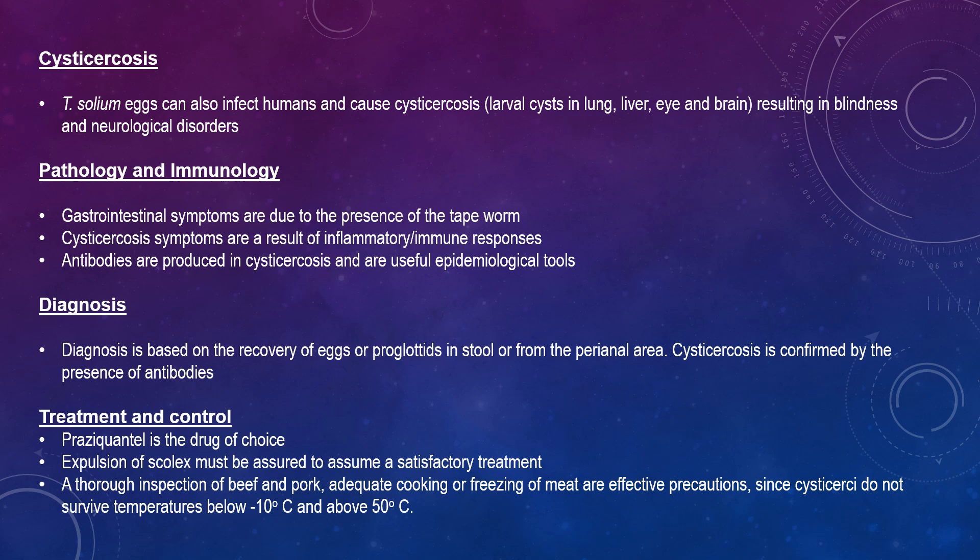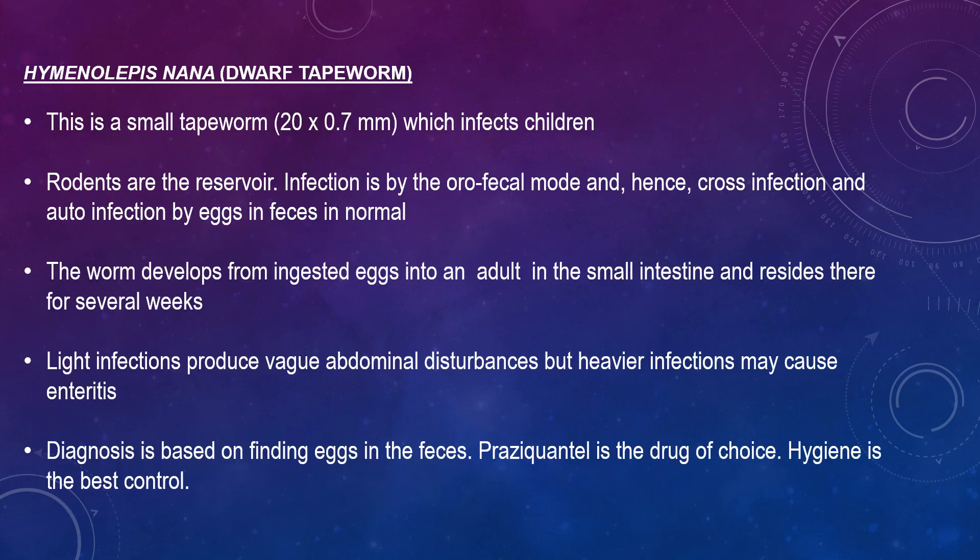For treatment and control, praziquantel is the drug of choice. Expulsion of the scolex must be assured to confirm satisfactory treatment. A thorough inspection of beef and pork, adequate cooking or freezing of meat are effective precautions, since cysticerci do not survive temperatures below minus 10°C and above 15°C.